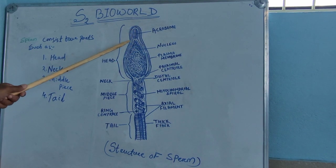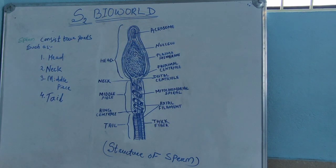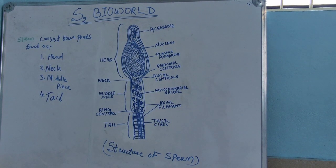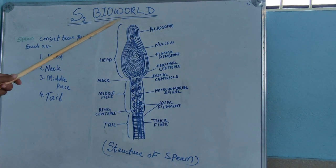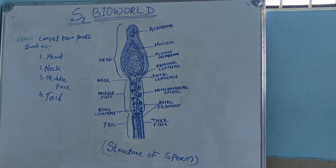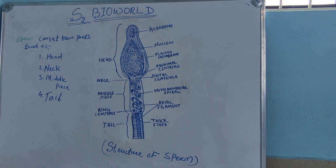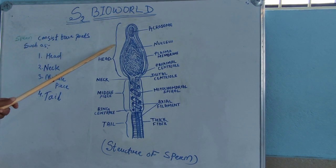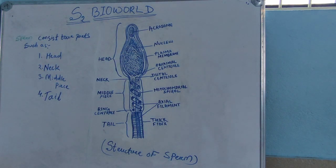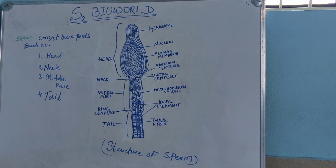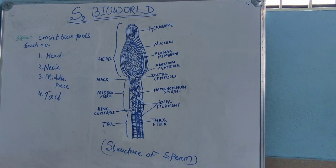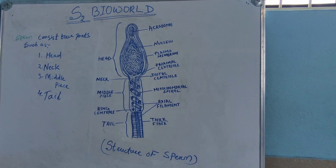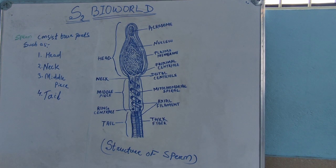The acrosome is a flattened cap-like structure present on top of the nucleus. The acrosome consists of hyaluronidase enzyme, corona penetrating enzyme, and acrosin — these are collectively called sperm lysins. These enzymes have the power to digest the layer of the ovum, that means the zona pellucida, which results in the release of the haploid nucleus into the ovum.